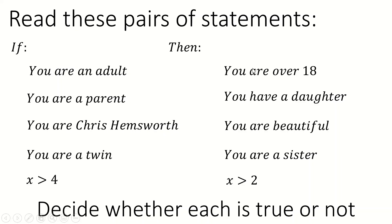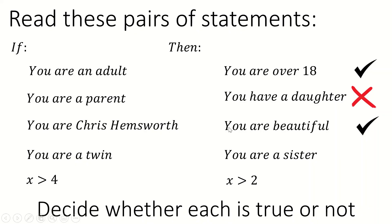If you're an adult, then you're definitely over 18, based on the legal definition. If you're a parent, I don't think you necessarily have a daughter — you could be a parent to three sons or one son. So that statement is not correct. If you are Chris Hemsworth, then you are beautiful — this is the first one that's somewhat subjective. People could disagree, though I think they'd be in the minority.